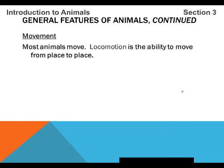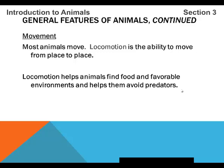Movement. Most animals move, and locomotion is the ability to move from place to place. Locomotion helps animals to find food and find favorable environments in which to live. The ability to move also allows organisms to avoid predators — obviously a rabbit that can't move is not going to get away from a fox.